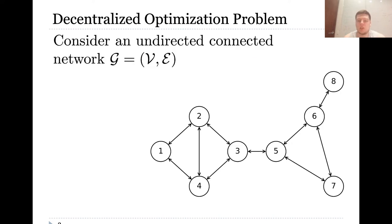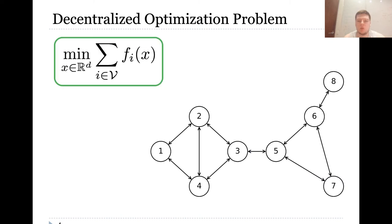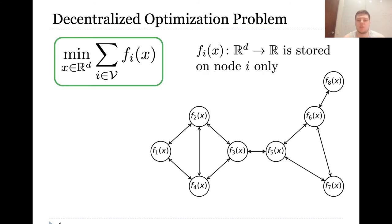We consider an undirected network G with V being a set of nodes 1 to N and E being a set of edges. Our goal is to find a solution to a finite sum minimization problem over R^D where each data describing function f_i is available to the corresponding node i only.